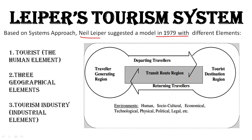There is a common mistake people make. In examinations like PGU or UGC NET, there was a question asking how many elements are in Leiper's Tourism System. People answered three — because TDR, TGR, and TRR became famous. But if we study Leiper's system fully, there are more than three elements.